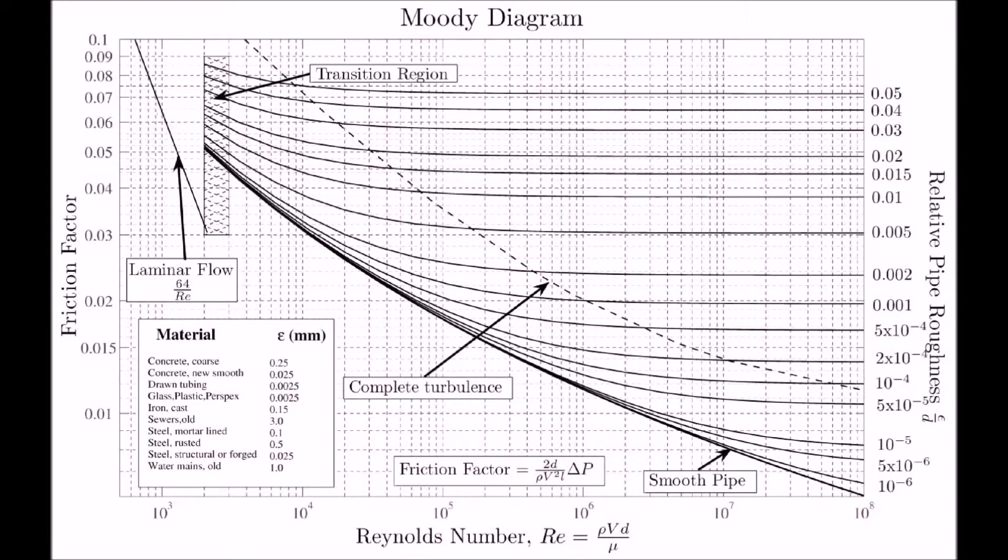Okay, so previously we said that we had a relative roughness that rounded to 0.005. So over on the right-hand side of our diagram, we have relative roughness, and our rounded value is 0.005. So the way that we use the Moody diagram is by identifying this as our line that relates to relative roughness. If we had a higher relative roughness, then we would need to use a line above this. And if we had a lower relative roughness, we'd be using a line below this one. And we can always take values in between if needed.